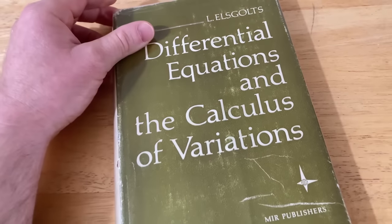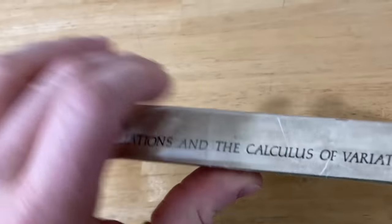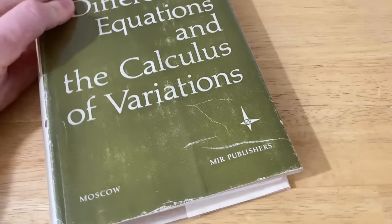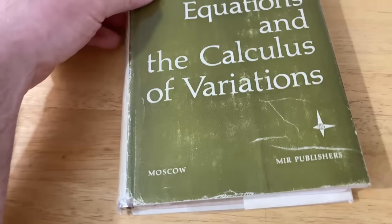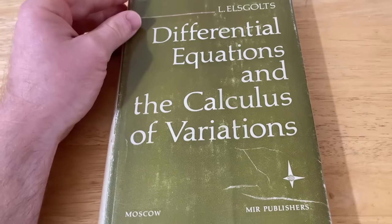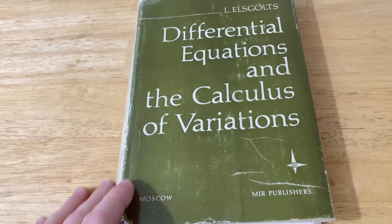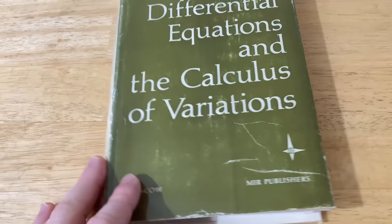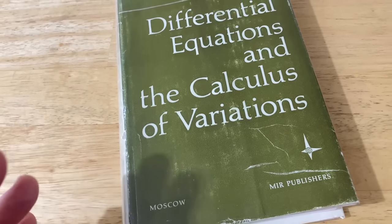The reason this book is so interesting is because this is actually a Russian math book that has been translated to English by this company known as Mir Publishers. So I bought this book because for years people have been leaving comments asking me if I have any books by Mir Publishers.